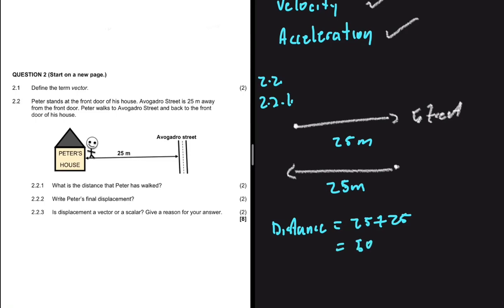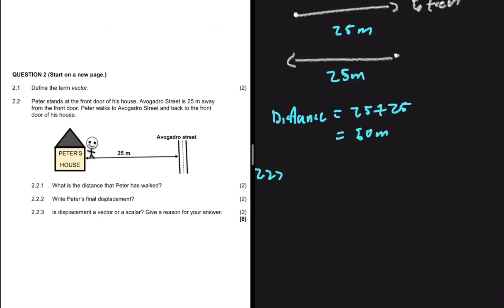The total distance Peter has traveled is 50 meters. Now, what about the displacement — is it also 50 meters? Bear in mind that distance is a scalar and displacement is a vector. Question 2.2.2 asks us to write Peter's final displacement, so let's remind ourselves what displacement is.